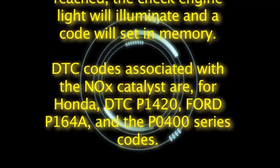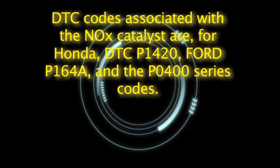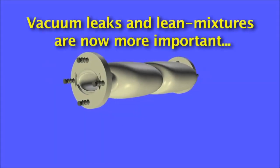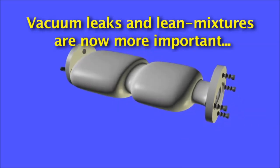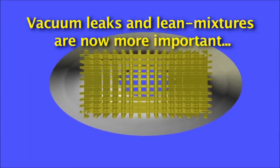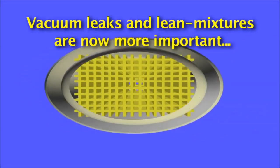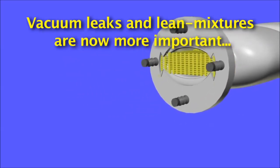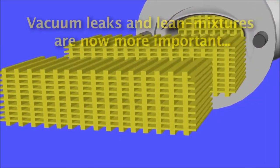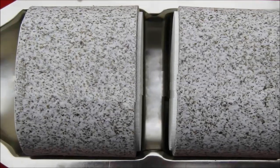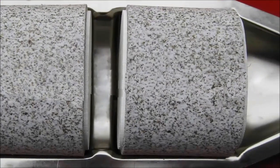DTC codes associated with the NOx catalyst are: for Honda, DTC P1420; Ford P164A; and the P0400 series codes. Also understand that with GDI technology, which employs lean burning mixtures by definition, the old menace vacuum leak is now a bigger menace. Making the mixture lean all the time, even when the ECM tries to regenerate the NOx catalyst by creating a temporarily rich mixture, will flag an erroneous NOx converter code and illuminate the check engine light. An issue with the air injection system will also have a nasty effect on the NOx regeneration. With GDI and NOx reduction technology, the little issues with vacuum and lean mixtures become amplified and can definitely skew your diagnostic conclusion.